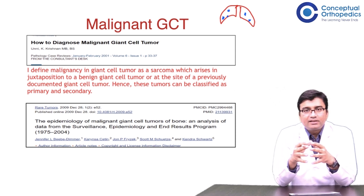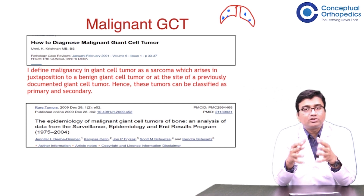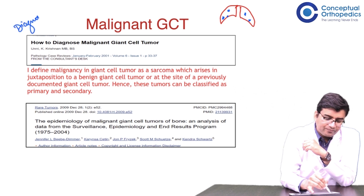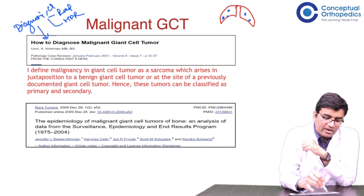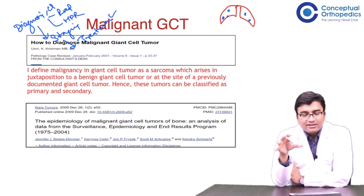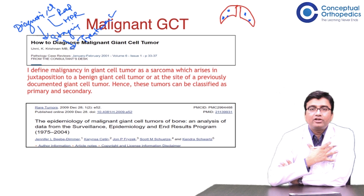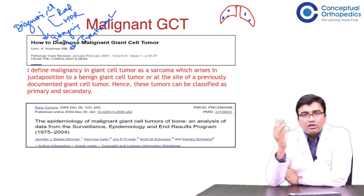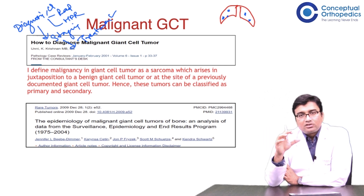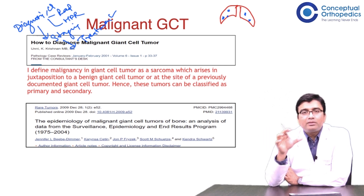Everything depends upon the biopsy, and it is very important that musculoskeletal pathology evaluates it carefully. The evaluation protocol includes diagnosis — which is clinical, radiological, and histopathological correlation — then staging workup, and then treatment plan. When you have a giant cell tumor and on staging workup you find lung nodules on chest x-ray, you may be confused whether to treat it as a sarcoma or a routine GCT. Please take the help of a good musculoskeletal pathologist.